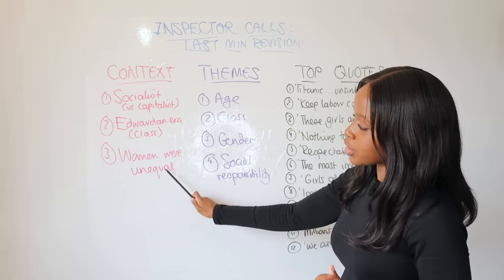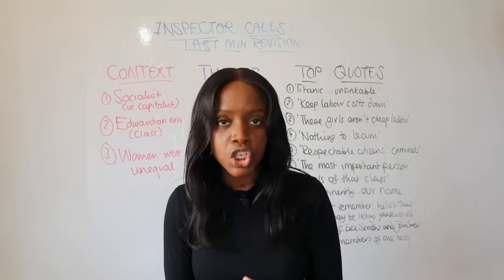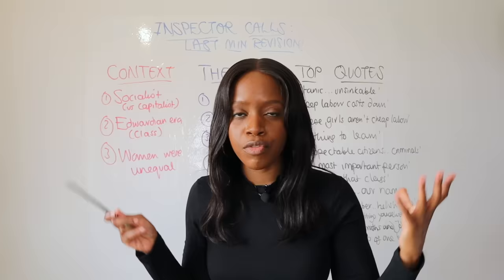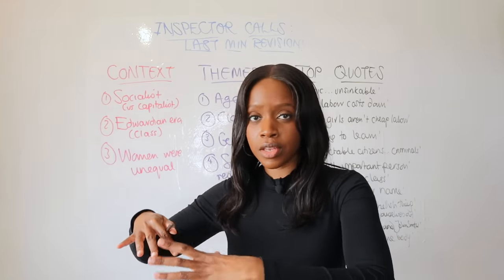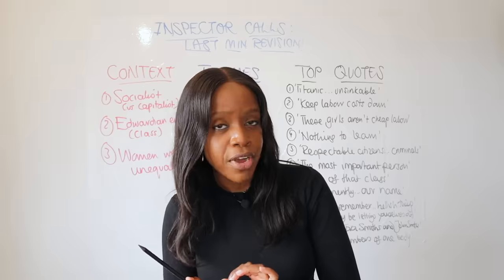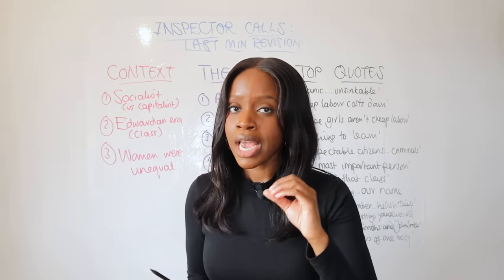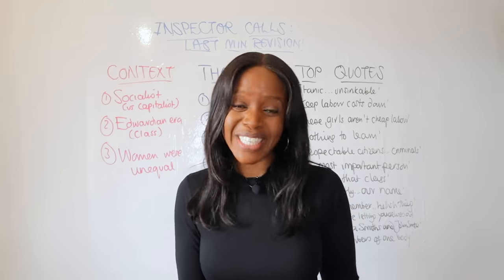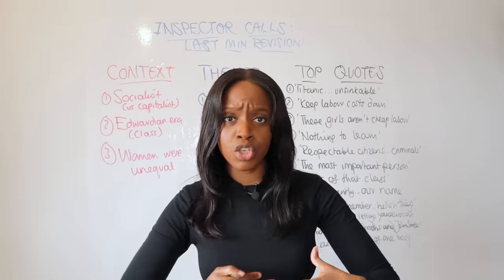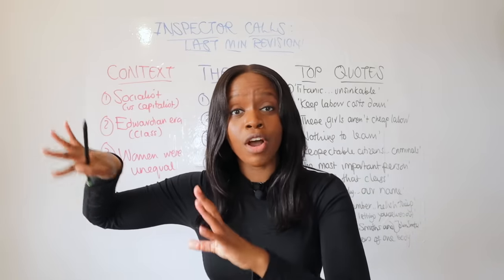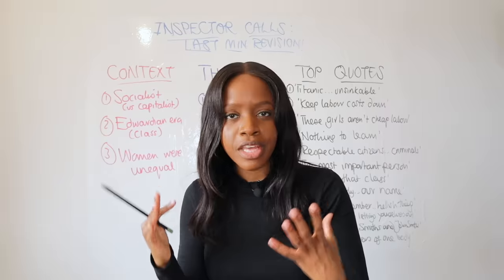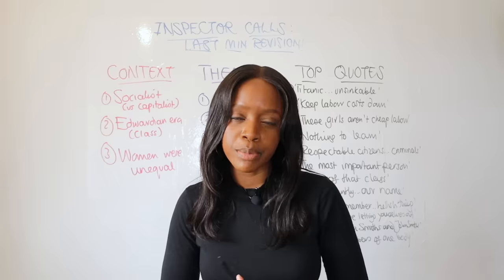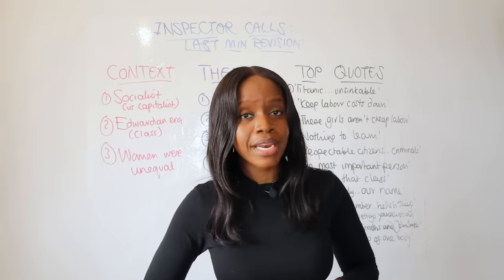The third theme is gender, closely related to the position women held in society during the Edwardian era. The women in this play are all taken advantage of to some extent — Eva and Daisy suffer the worst treatment, but Sheila is also cheated on by Gerald, and her parents try to force her back into marrying him at the end. Think also about Mrs. Birling, who set up a charity because she knew how difficult life was for women, especially working-class women, even if she was somewhat hypocritical.